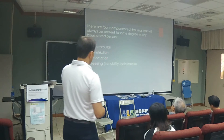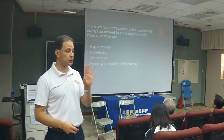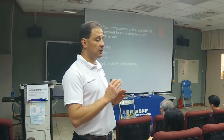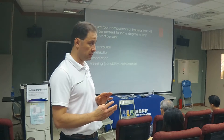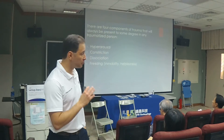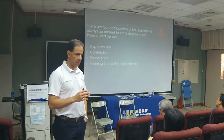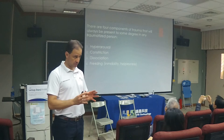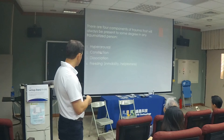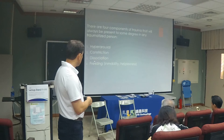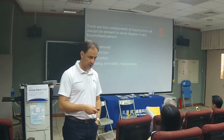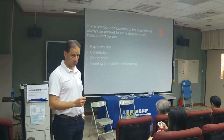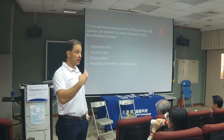Continuing on the trauma track — there are four key elements to trauma, and most of your clients are going to present those four elements at one point or another. They don't happen in the same sequence or at the same time, but they always occur. The first one is hyperarousal, constriction, dissociation, and freezing — better called helplessness. It's very important that you learn how to identify them with your clients, because they can hinder the intervention.